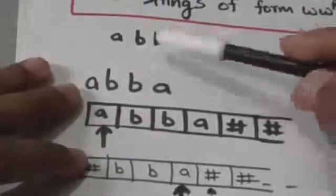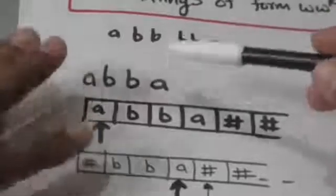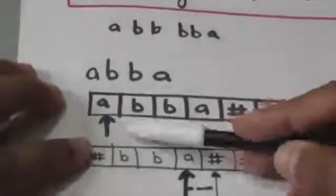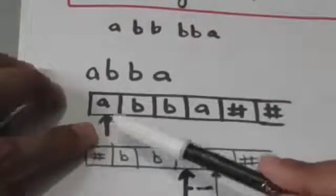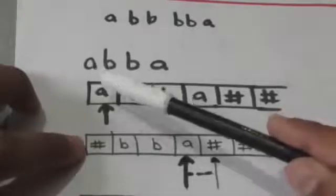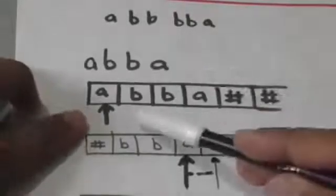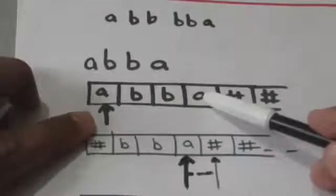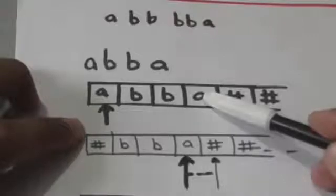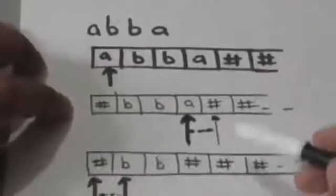Now see how this string will be accepted by the Turing machine. First, the Turing machine will read the first symbol of the string and erase it — that is, replace it with a blank symbol. Then it will compare the first symbol it has read with the last symbol of the string. If they are the same, it will erase the last symbol.